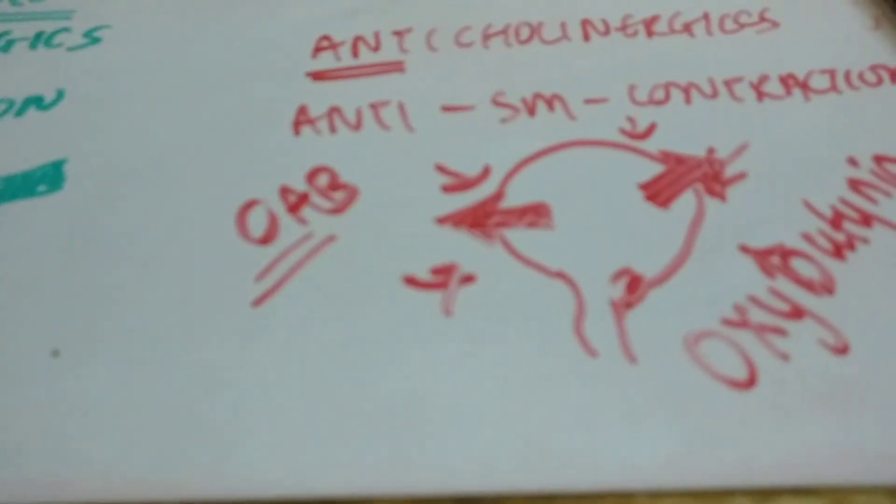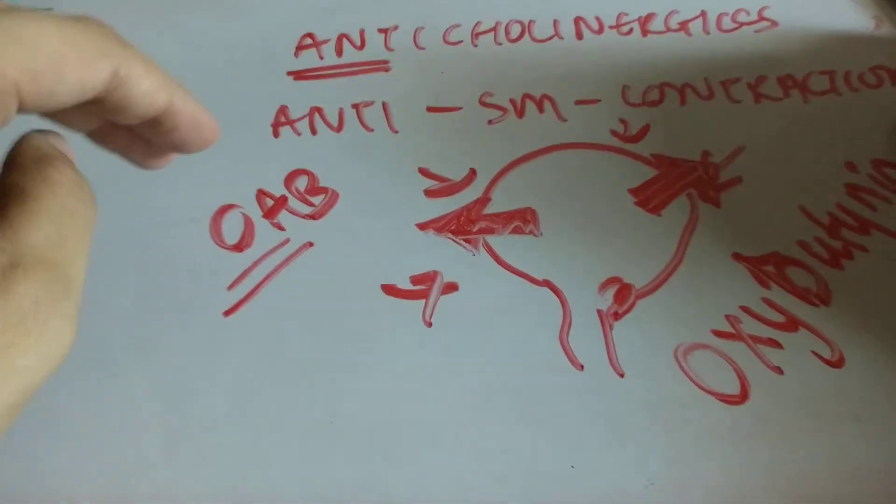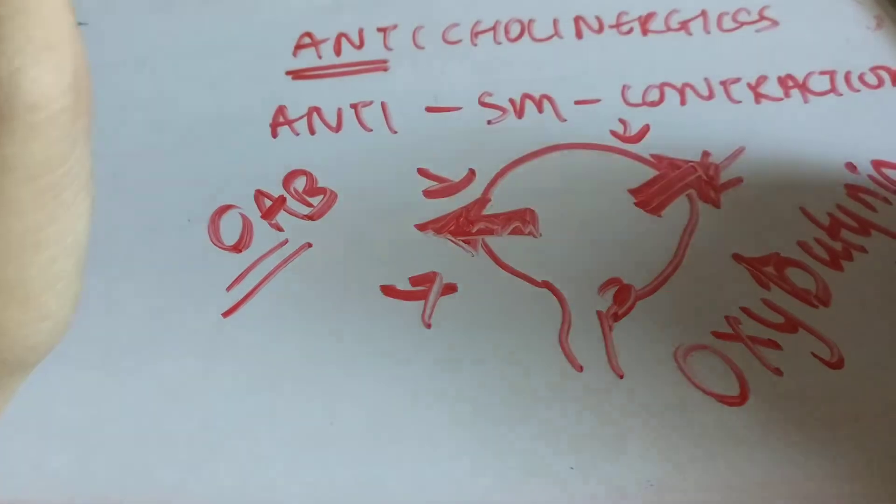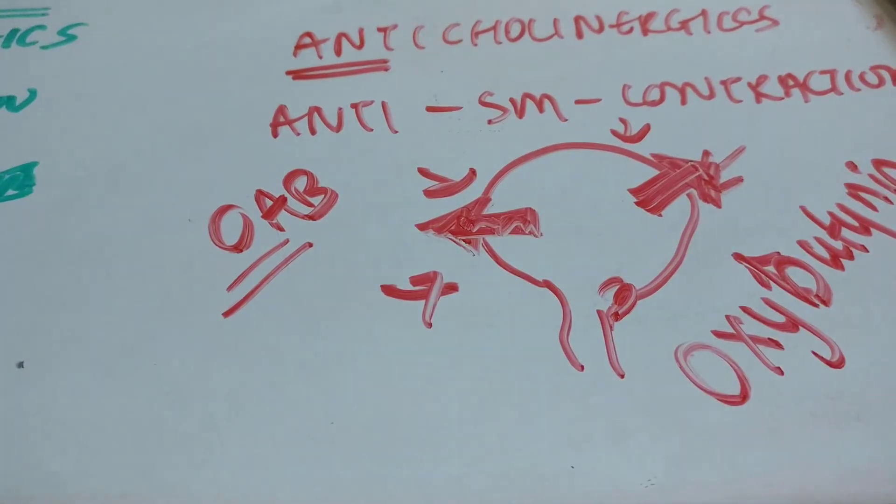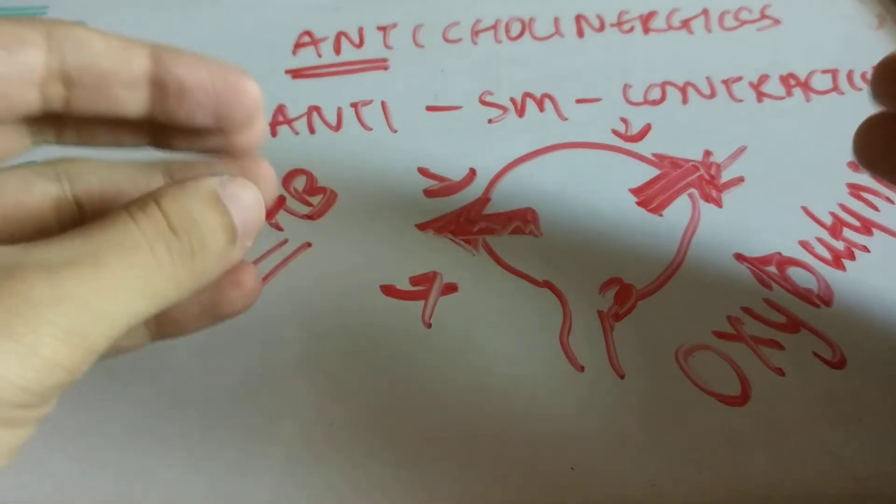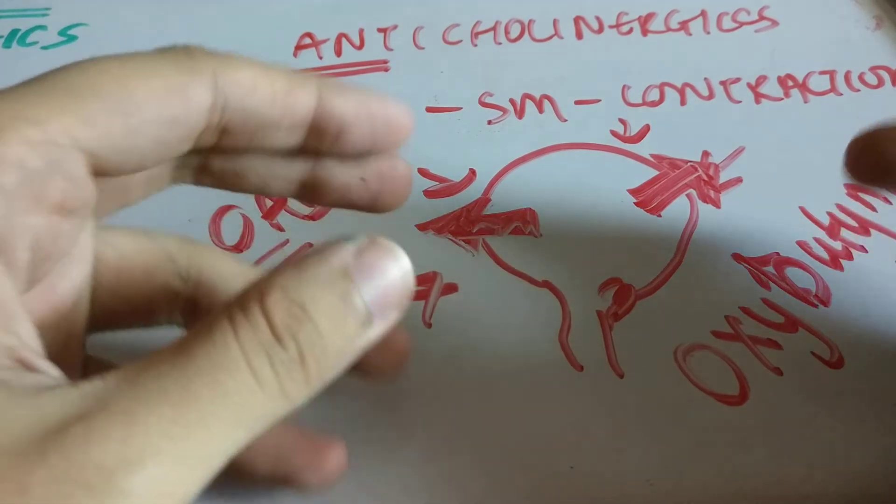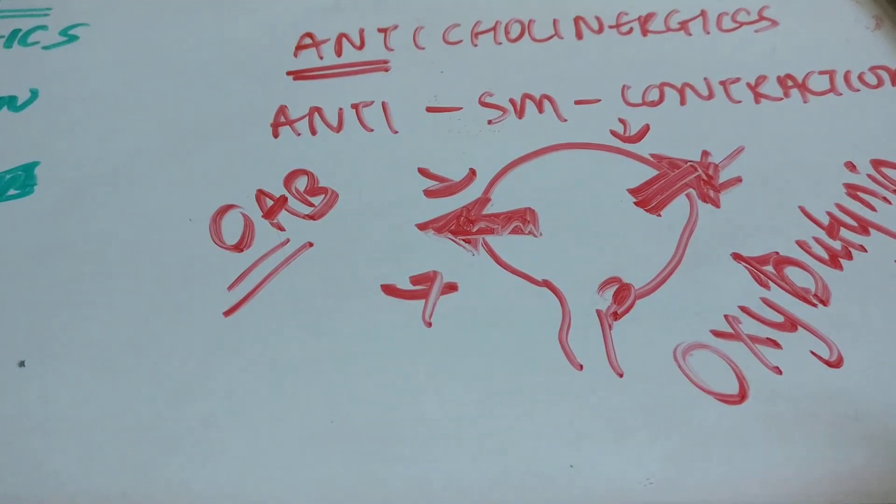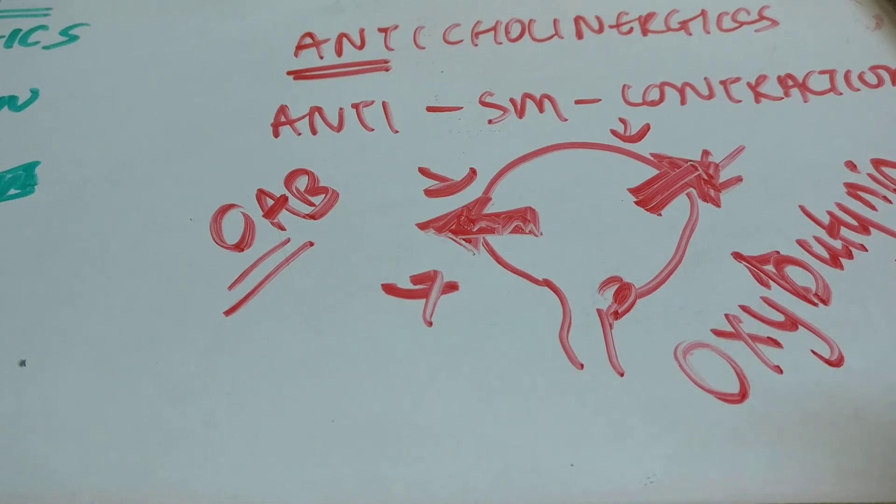Remember that many drugs have anticholinergic properties, like antihistamines and cold medications. They can cause retention of urine, especially in elderly patients, which is why we avoid anticholinergics in the elderly.